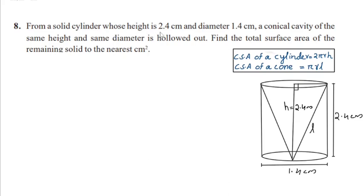From a solid cylinder whose height is 2.4 cm and diameter 1.4 cm, a conical cavity of the same height and same diameter is hollowed out. Find the total surface area of the remaining solid to the nearest centimeter square.